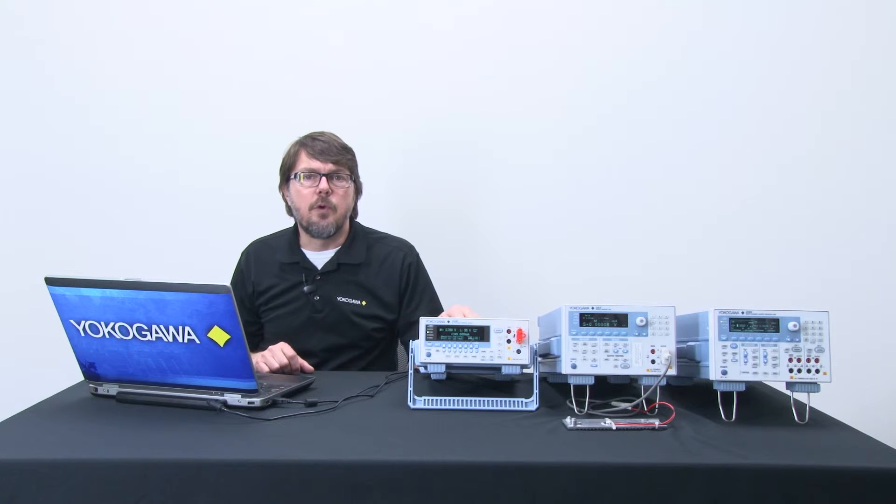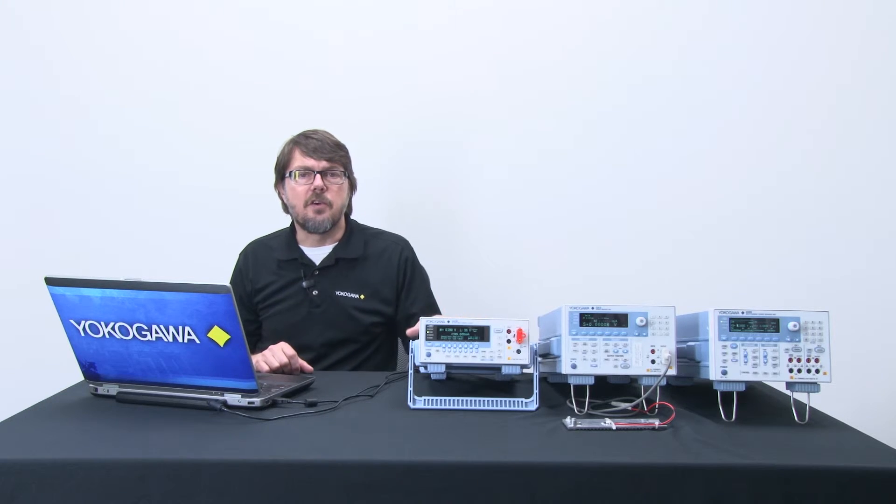So again, the GS200 will forward bias the diode, measure the current, and save both values, the voltage and the current values, into a single CSV file for me. Okay, let's get started.